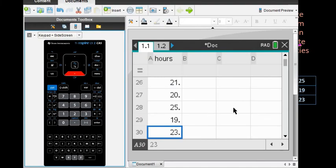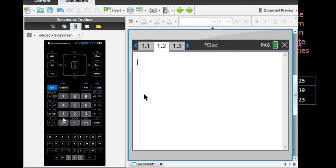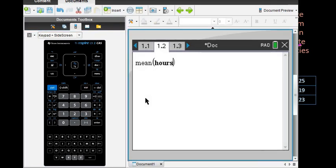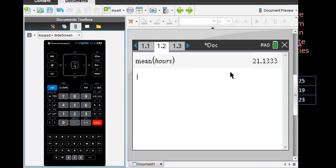So now that you have your data in, what I like to do is instead of doing any calculations in the spreadsheet itself, which I find it's hard to find the information, I will hit control and I and insert a calculator screen. So I'm going to open the calculator screen, and the nice thing is with this one I can just type in the word mean and then it will bold it, that's saying that it's a command. I can put the parentheses and then I can go to my variables and select the variable that I typed in. So hours was the only variable, and then when I hit enter it gives me the answer, 21.133.